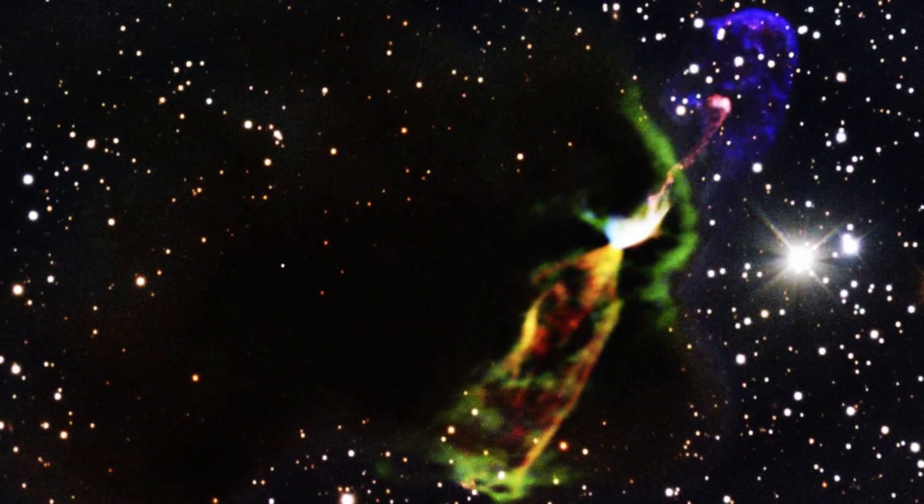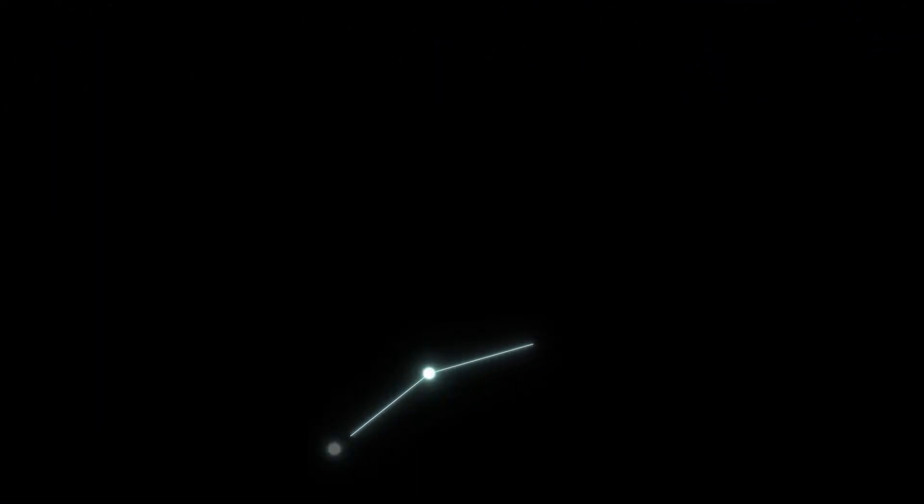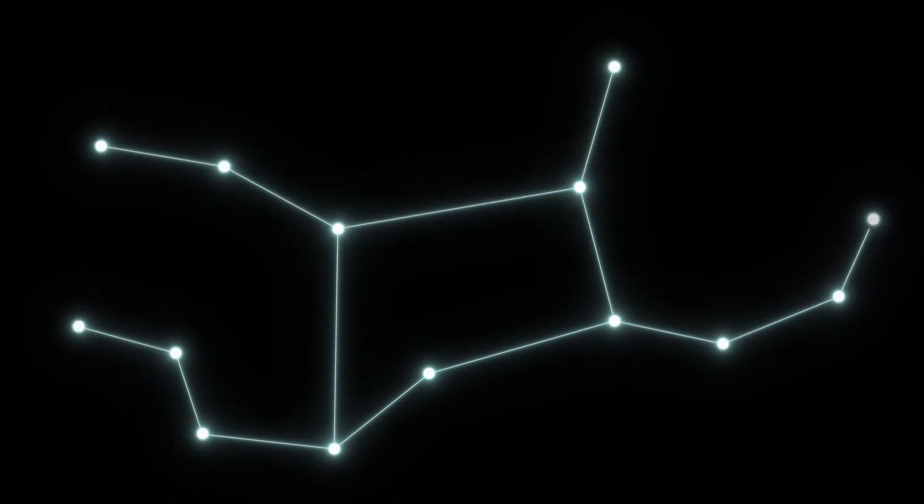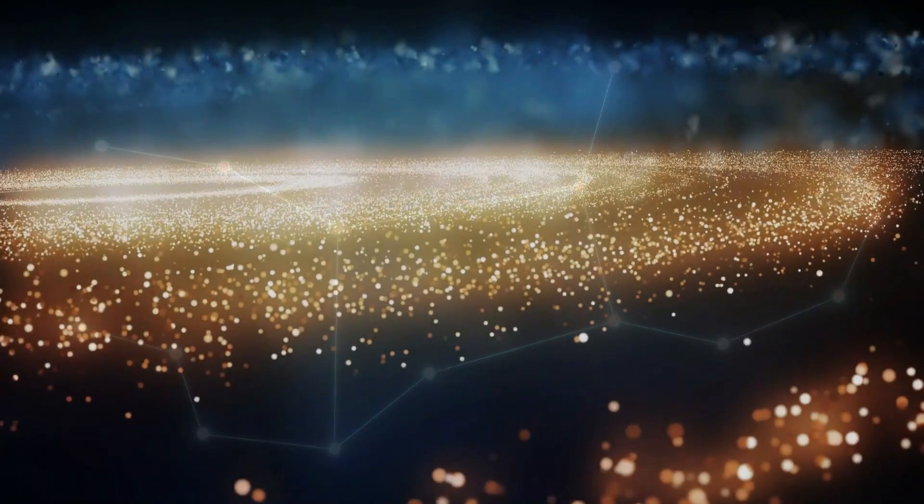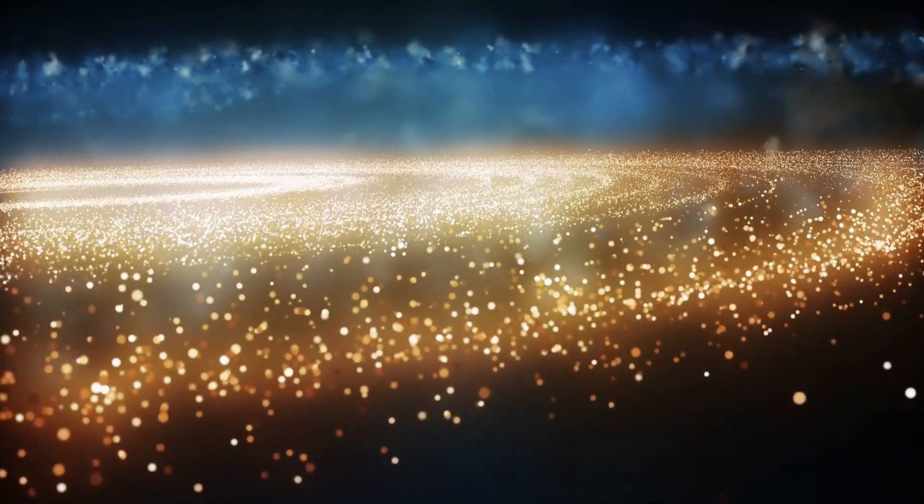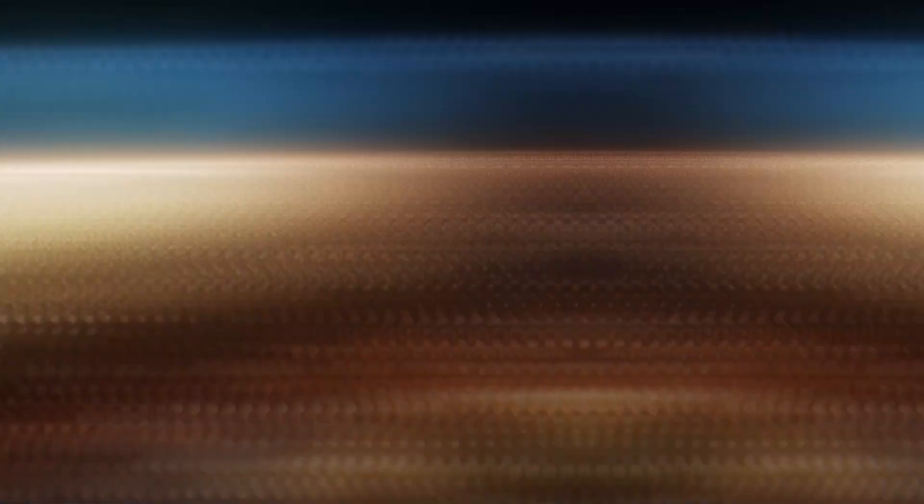Say hello to Herbig-Haro 46/47, a pair of energetic young stars partying it up in the Vela constellation very far away, 1,470 light years to be exact. These stars are still in their teen phase, forming and twirling around each other like best friends on a dance floor.